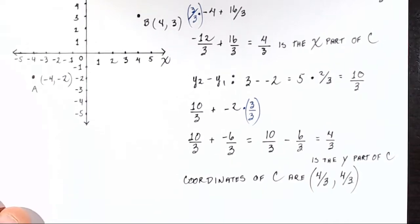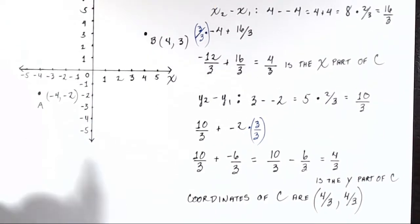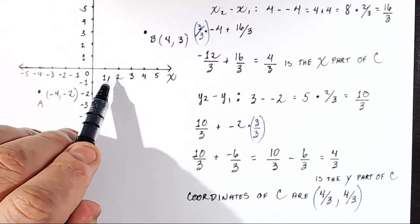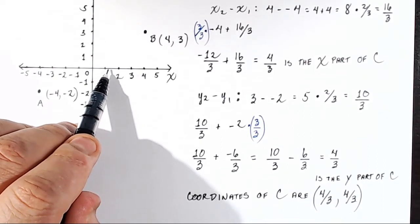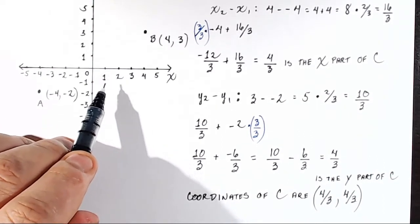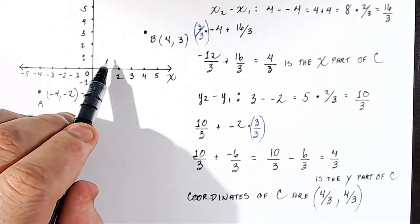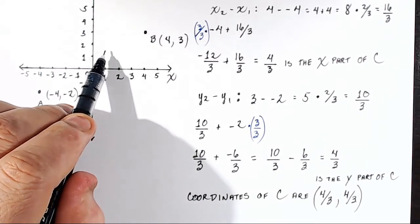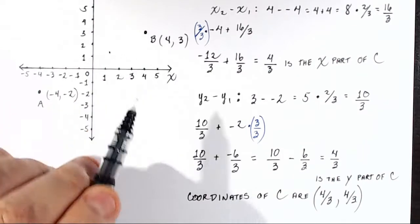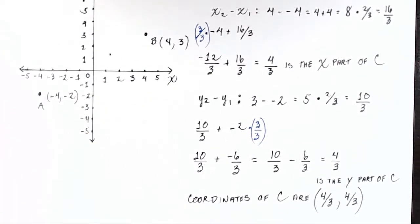So let's see where that might lie. If we think that 1 and 1 third is about right there, about a third of the way between 1 and 2, and then we also want to do that on the y-axis, then our point should be somewhere right there. Like that.